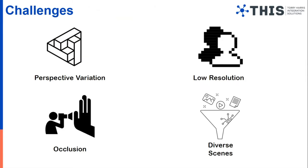Now we will see the challenges we will face while creating a crowd management tool. Before going into the approach, here I will give some basic challenges and in the upcoming slides we will see how we overcome those challenges. The first is perspective variation — how and at what angle the image was taken based on the CCTV camera perspective or the photographer's perspective. Due to the change in variations, some information will be lost.